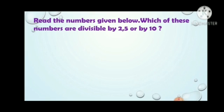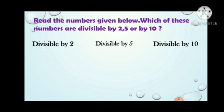Now children, take the textbooks in your hand. Read the numbers given below. Which of these numbers are divisible by 2, 5 or by 10? The numbers are in your textbook. First number is 125 — it is divisible by 5. 364 — it is divisible by 2. 475 — it is divisible by 5. 750 — it is divisible by 2 as well as 5 and as well as 10.